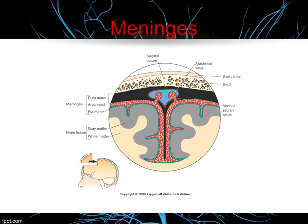The subdural space is between the dura and the arachnoid. The third and innermost layer is the pia mater — a very thin, transparent layer that hugs the brain just like saran wrap. The subarachnoid space is between the arachnoid and the pia mater. Whenever we have bleeding from trauma, we name it according to where it's located in relationship to the meninges.